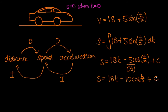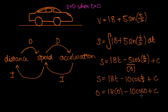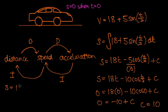To determine the constant we use initial conditions. When t equals 0, s equals 0: 0 equals 18 times 0 minus 10 cosine 0 plus C. Since cosine 0 equals 1, we get 0 equals minus 10 plus C, therefore C equals 10. So the equation for distance traveled after t seconds is s equals 18t minus 10 cosine t over 2 plus 10.